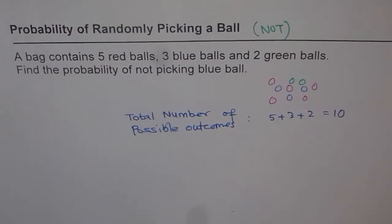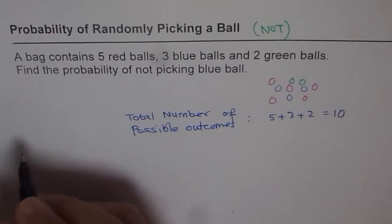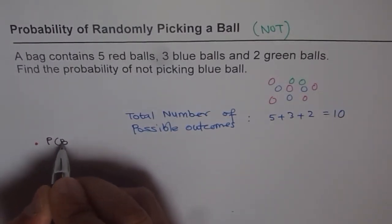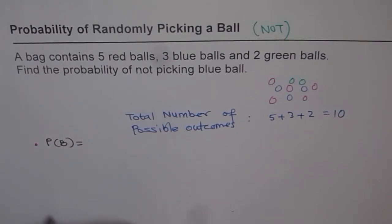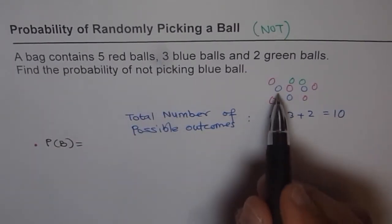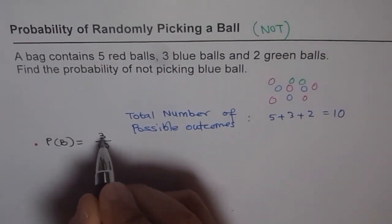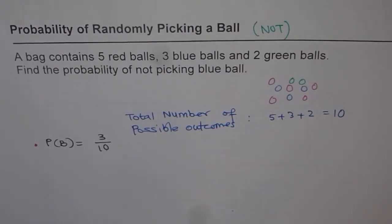So how will you do that? We can have two approaches here. We can find the probability of picking a blue ball, and then from there get the probability of not picking a blue ball. Let's do that. The probability of picking a blue ball is three over ten.